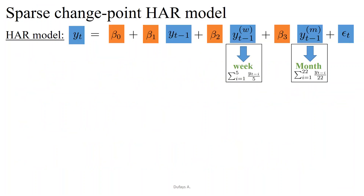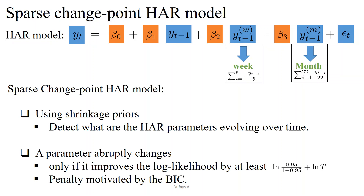The HAR model is an autoregressive model in which the explanatory variables are the previous value and the average values over the last financial week and the last financial month respectively. We adapt the HAR specification to operate in the sparse change point framework and use shrinkage priors to detect which HAR parameters evolve over time.